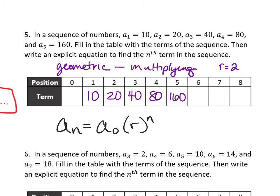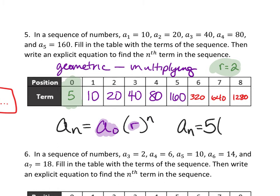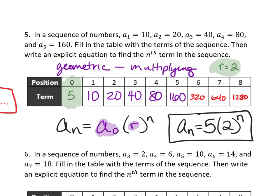All I have to fill in is the a sub 0 and the r. Let's fill in the rest of the table — if we're multiplying by 2, the 6th term would be 320, the 7th would be 640, and the 8th term would be 1,280. But what is that zeroth term? It's 5, because we'd have to multiply 5 times 2 to get 10, so a sub 0 is 5. Knowing that information, the equation is a sub n equal to 5 times 2 raised to the n power. That's the pattern we would use to create any nth term in the sequence.